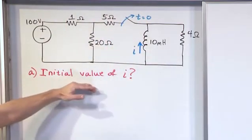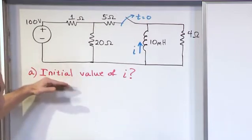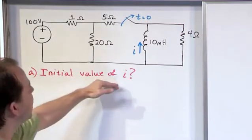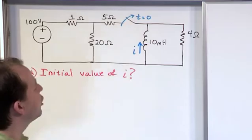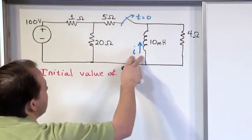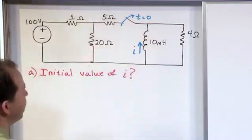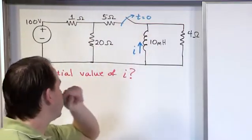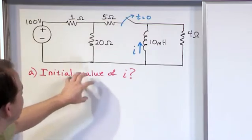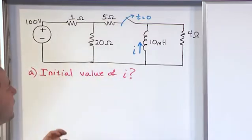What we want to find is several things, but first we're going to find the initial value of I. The current labeled in the circuit flows through the 10 millihenry inductor, and the reference direction given in the problem is in the up direction. So the question is, what is the initial value of I?